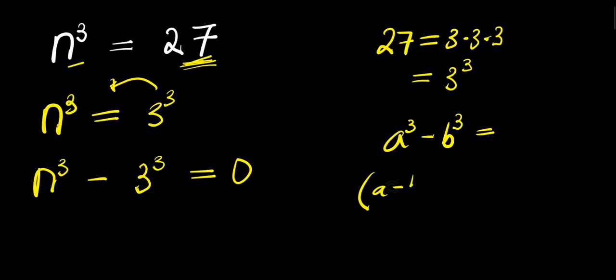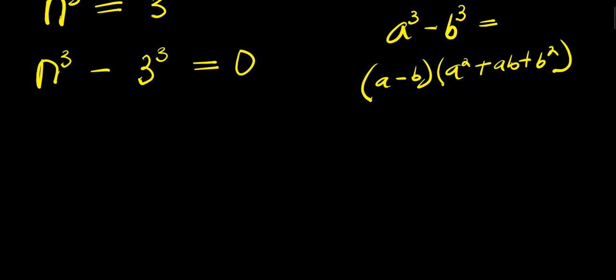This equals (a - b)(a² + ab + b²). So if a equals n and b equals 3, you can solve using that particular identity.